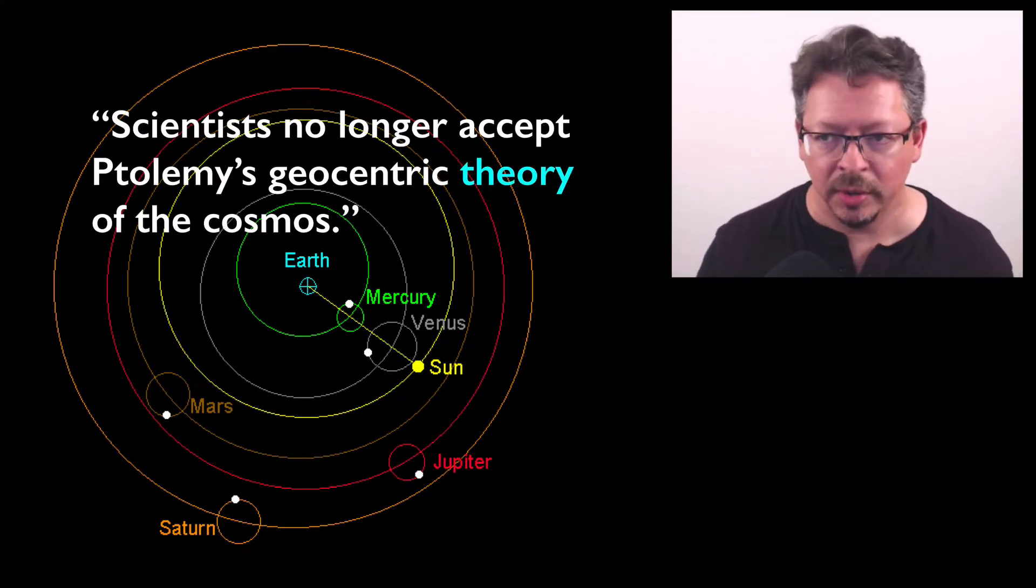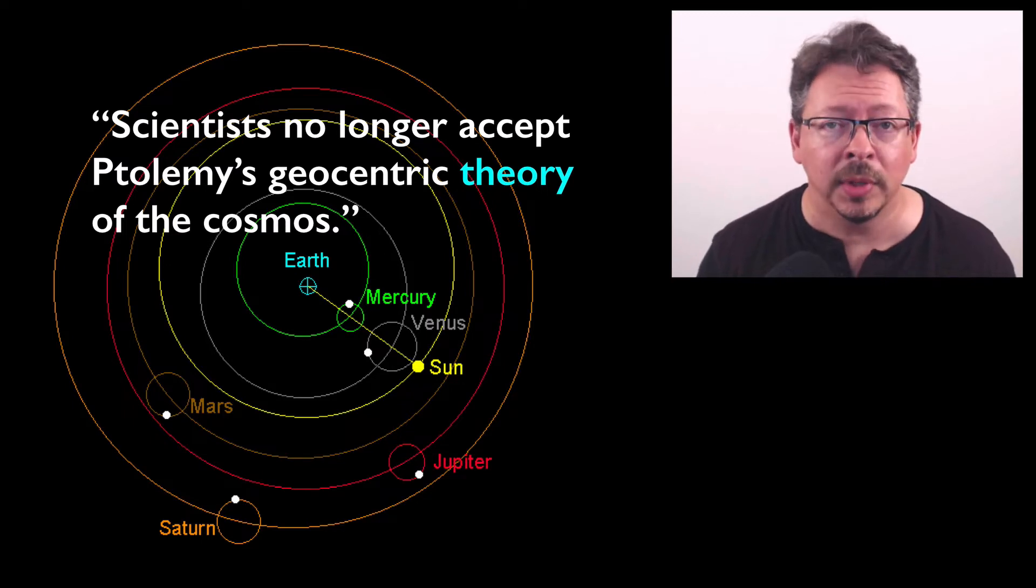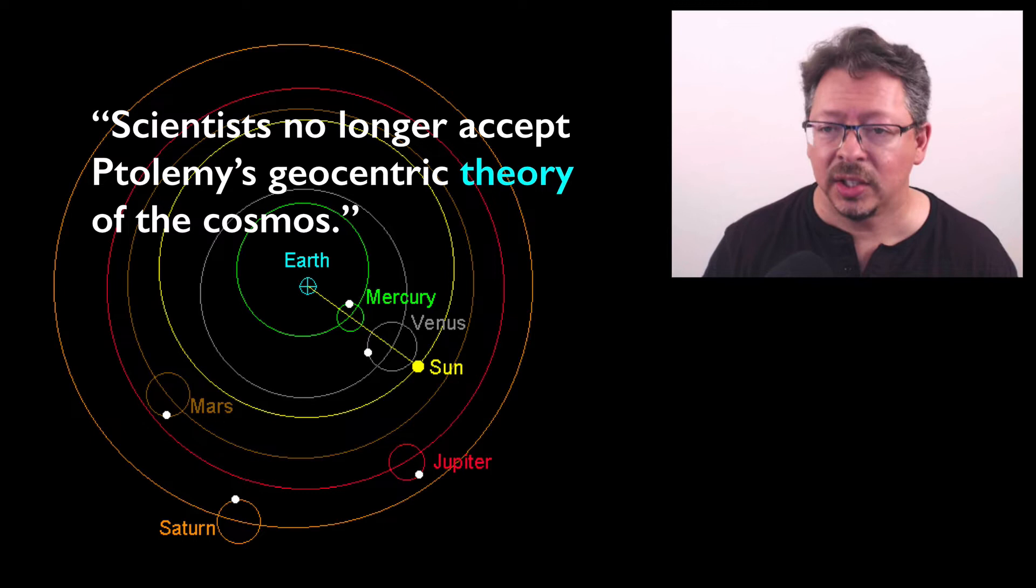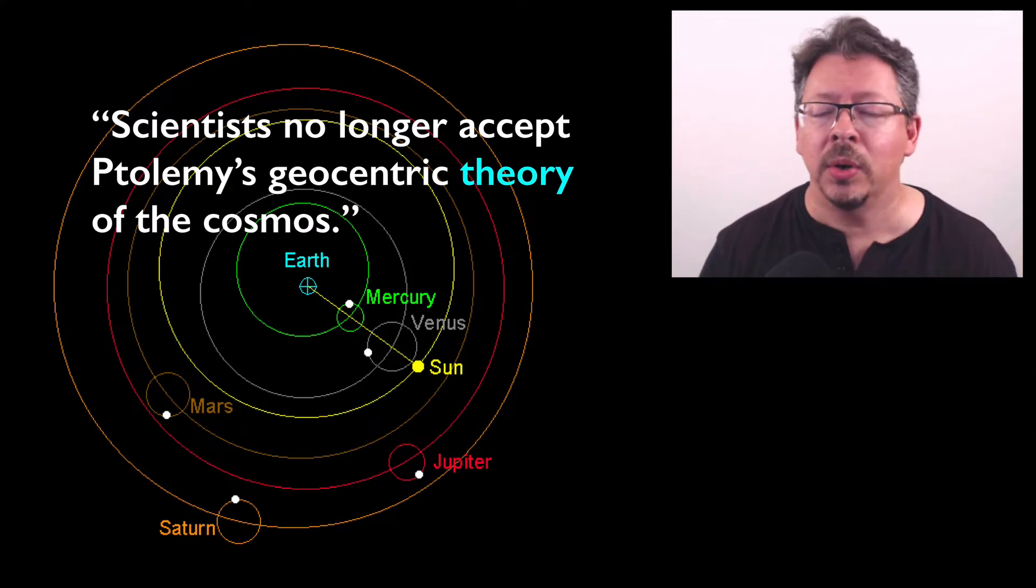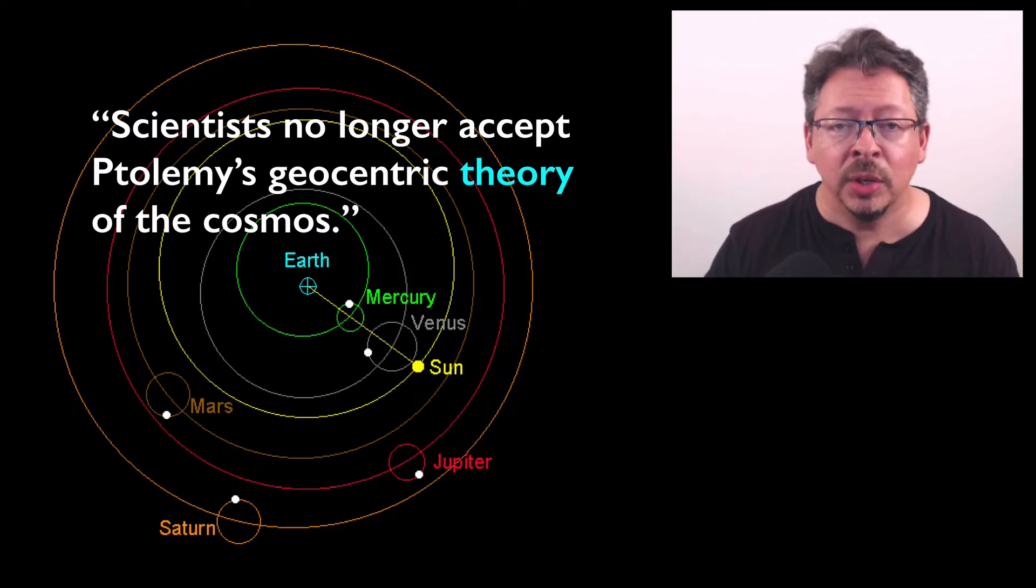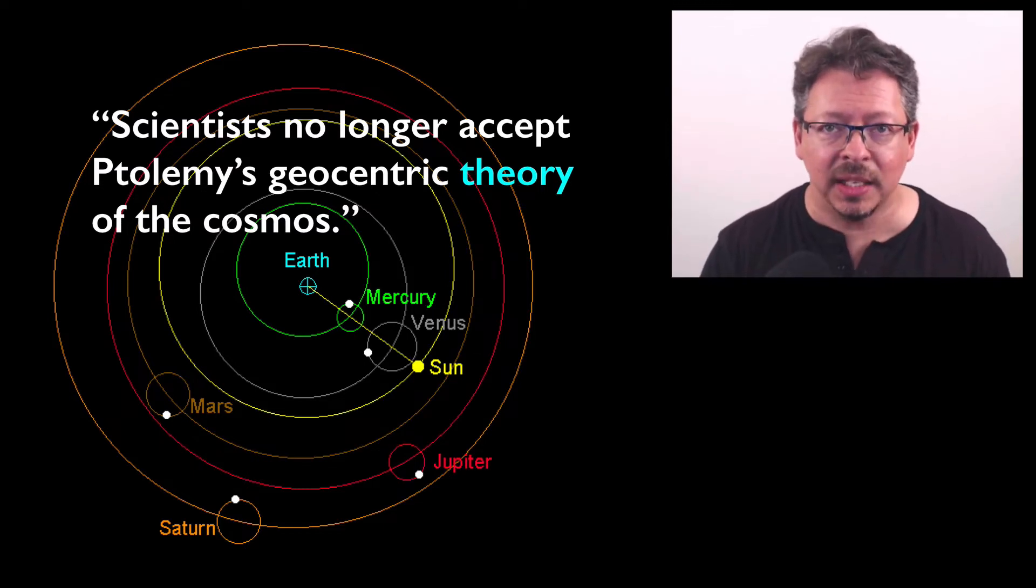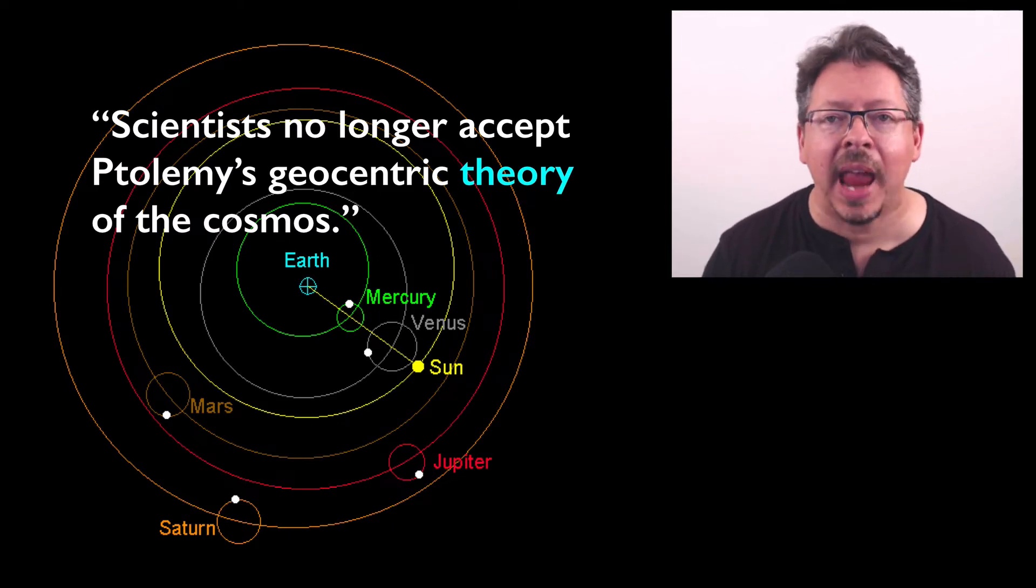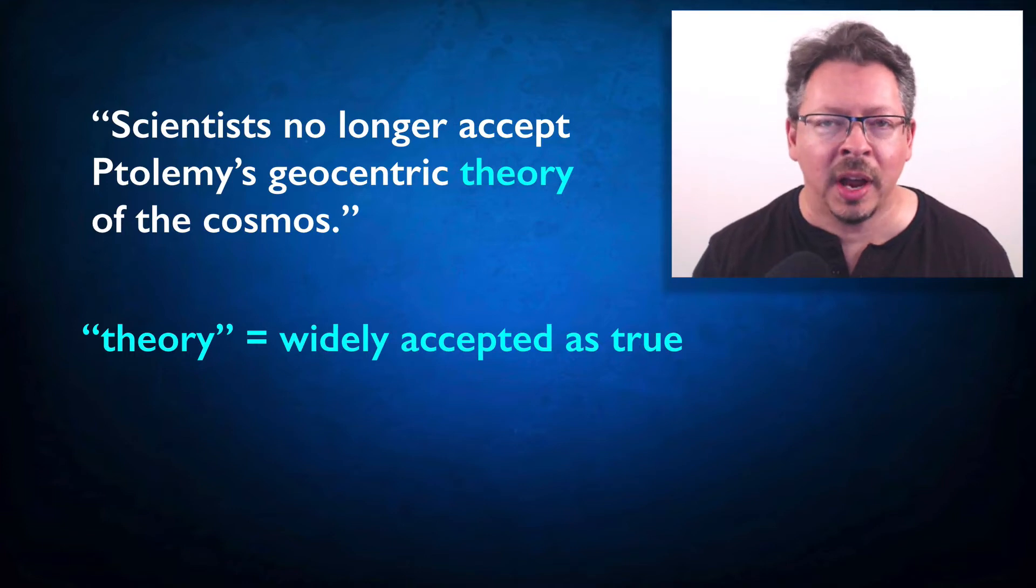Obviously, we don't accept this theory anymore, and we haven't for some time. It's very natural to say something like this: that scientists no longer accept Ptolemy's geocentric theory of the cosmos. We don't have any trouble understanding what we mean when we say this. But if so, then the usage of theory in this sentence cannot be the one we were looking at in the last video. It can't be an epistemically loaded up-player.